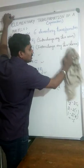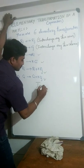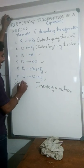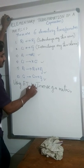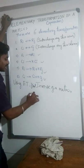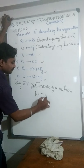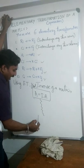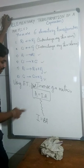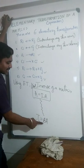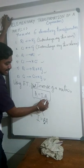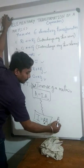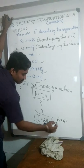Using these elementary transformations, we are going to find out the inverse of a matrix. The procedure is: consider the given matrix in the form A equals I times A. Apply a sequence of elementary row or column operations to reduce this equation into the form I equals B times A. Then B is the inverse of A, that is B equals A inverse.